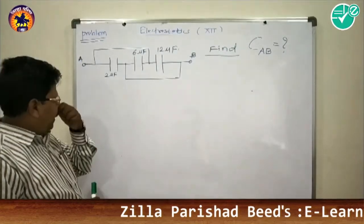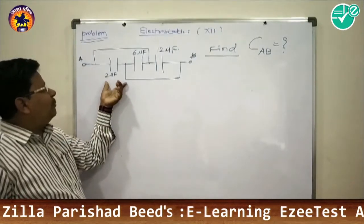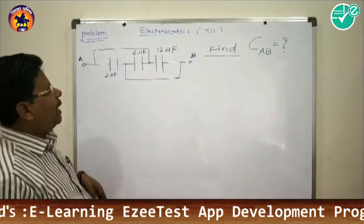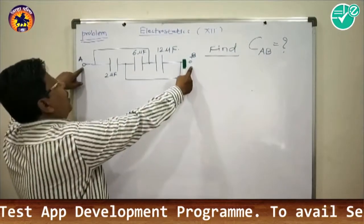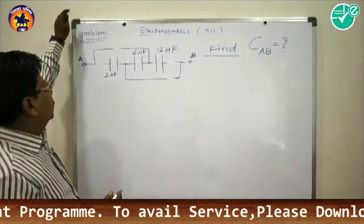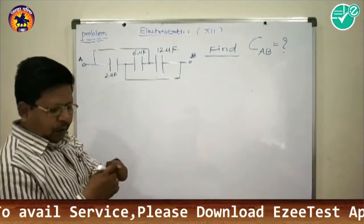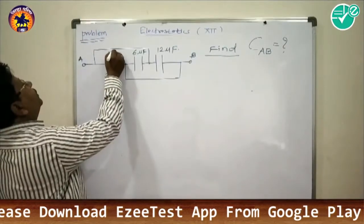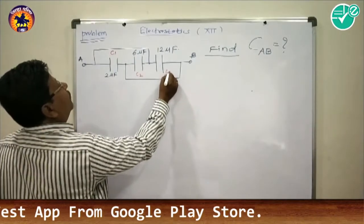A diagram of series and parallel combination of capacitors is given, and we have to find the equivalent capacitance between two points A and B. The first capacitor is C1, the second is C2, and the third is C3.